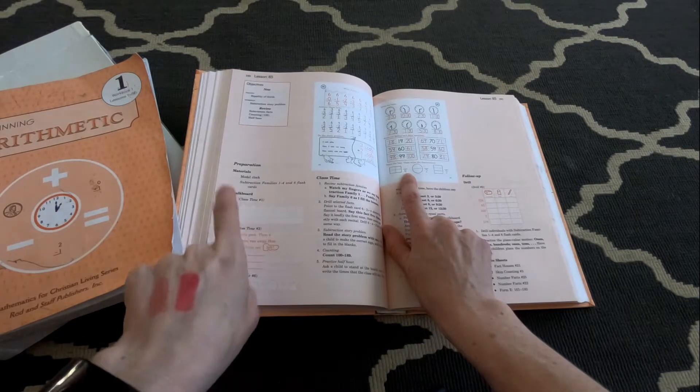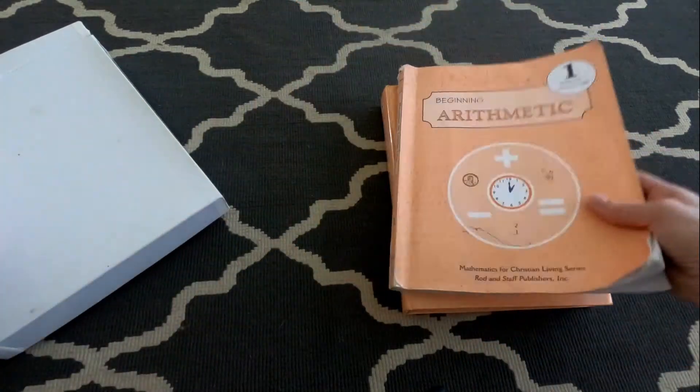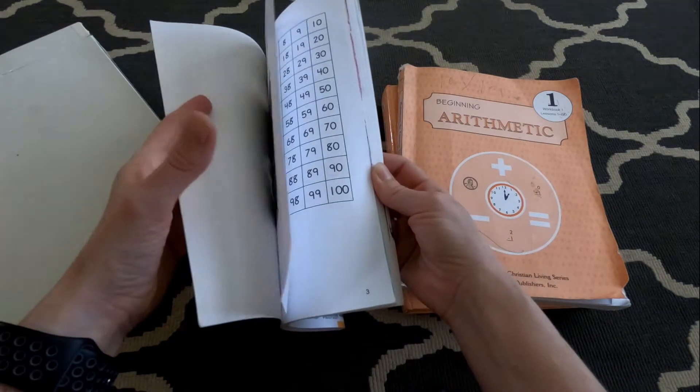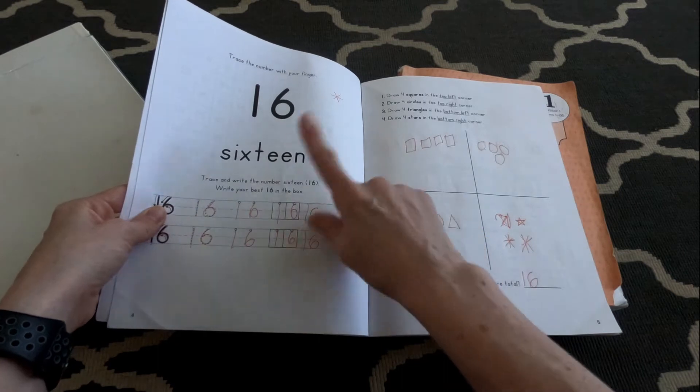So like I said, we only teach about two or three lessons a week from this book. And then throughout the rest of the week they interact with their numbers book. I can't find numbers book one, but numbers book one is numbers one through 15 and then the second book picks up at 16.